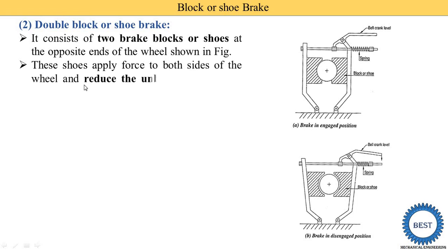The shoes apply force to both sides of the wheel, reducing the unbalanced force on the shaft. In the single block shoe brake, the shoe is provided only on one side, which causes uneven force and unbalanced rotation. This disadvantage is removed in the double block shoe brake, where two shoes apply the same pressure on both sides, eliminating unbalanced forces on the shaft.